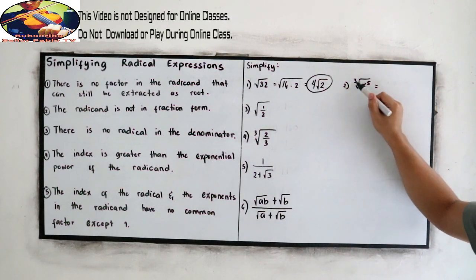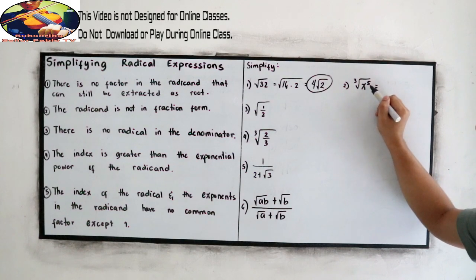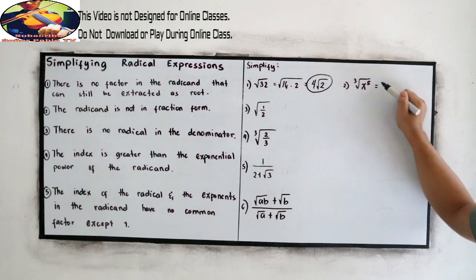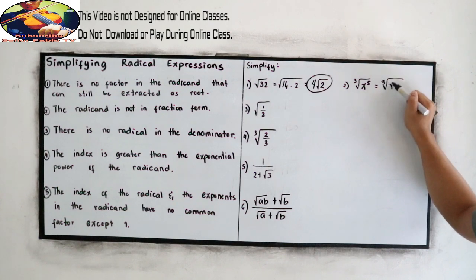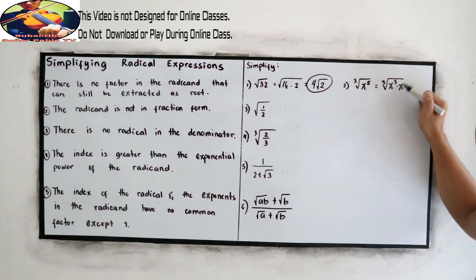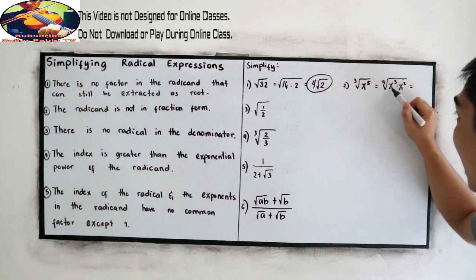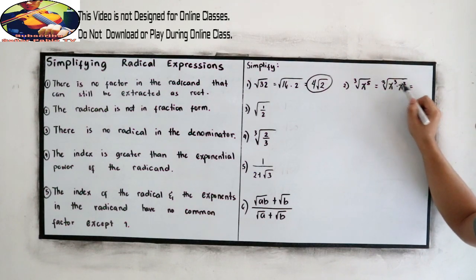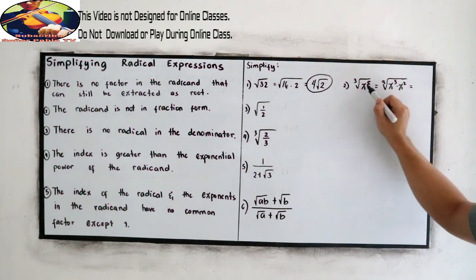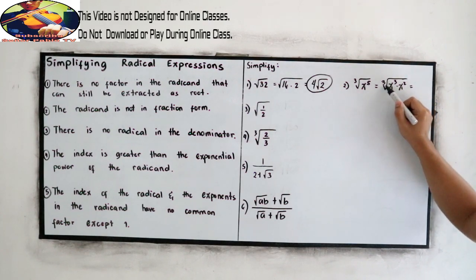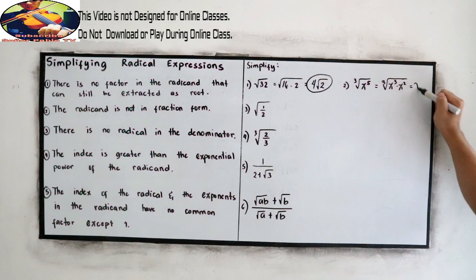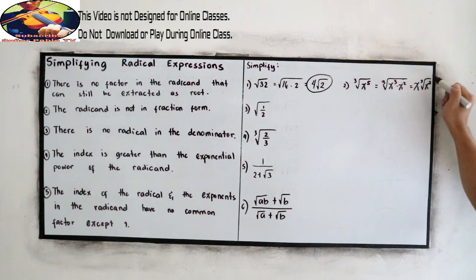Second example: cube root of x raised to the 5th power. Factors of x⁵ can be written as x³ times x². Following the laws of exponents, if we have the same base, add the exponents. So 3 plus 2 is 5. Cube root of x³ gives us x. Then cube root of x².